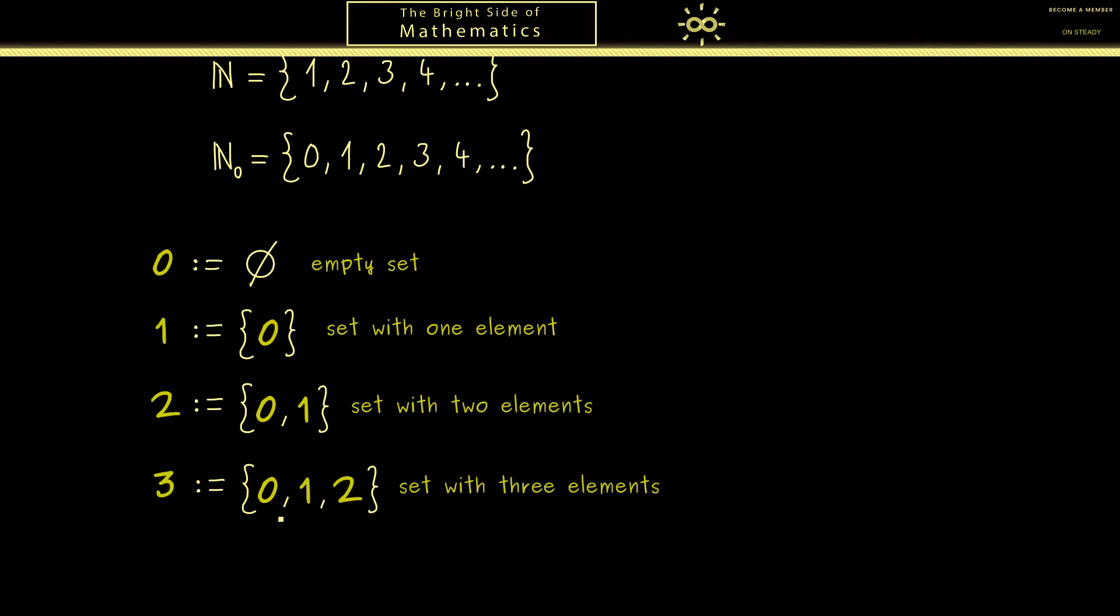Therefore this is our number 3 as a set and the same way we can write down the number 4. However here you might already wish for a shorter way to write it down. And of course if you compare to the set before 3 we just add one element. For this reason we can just write it as a union.